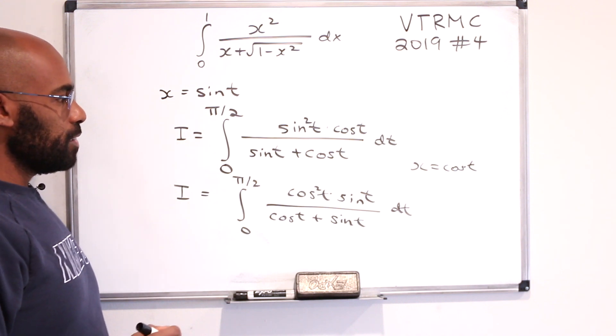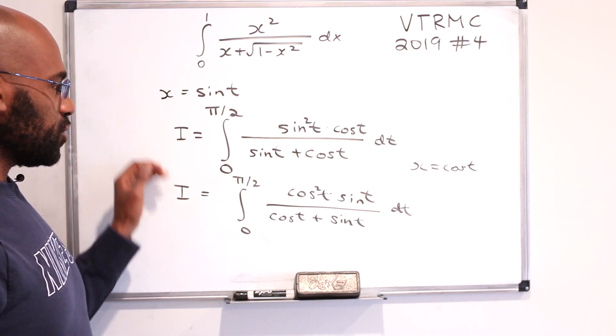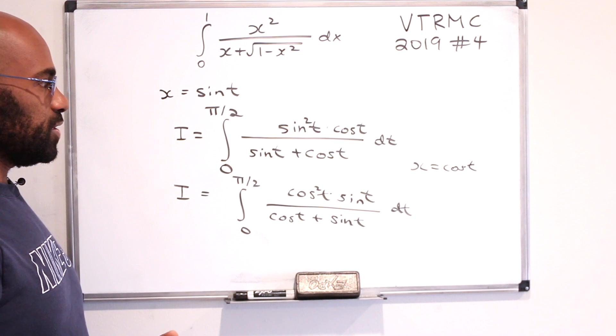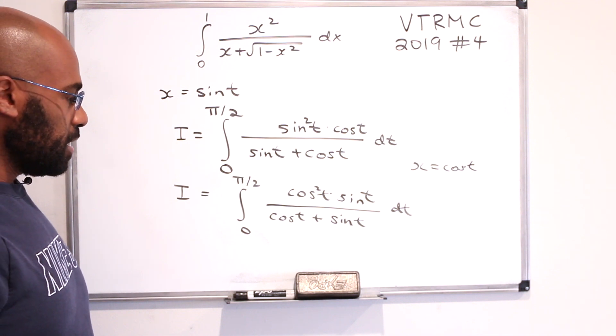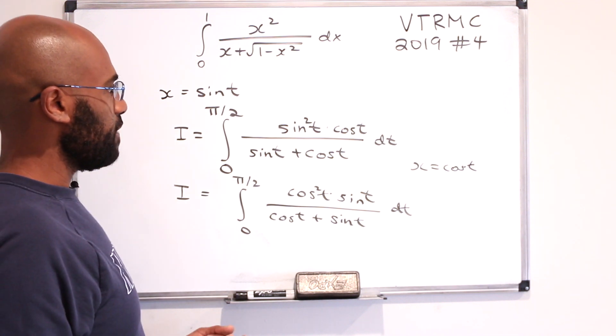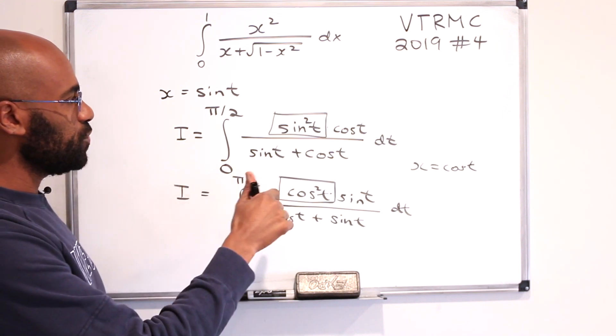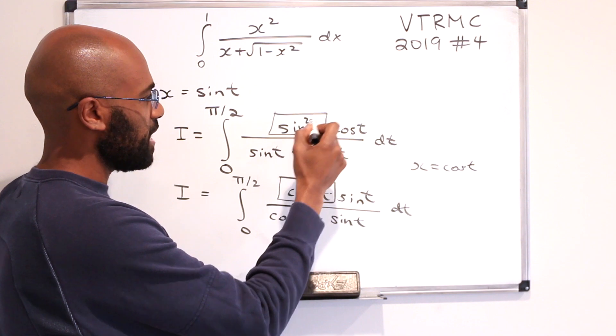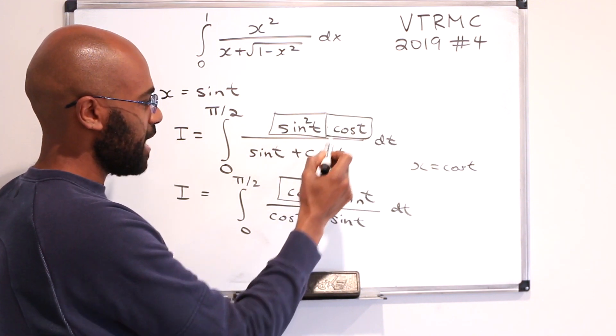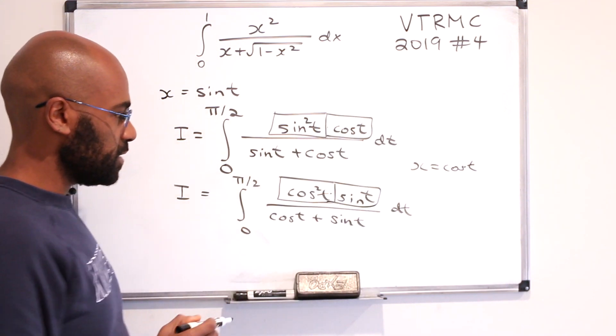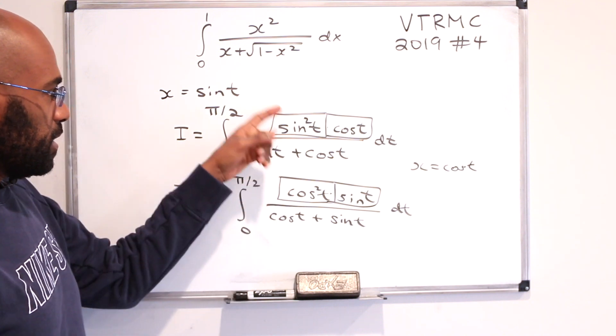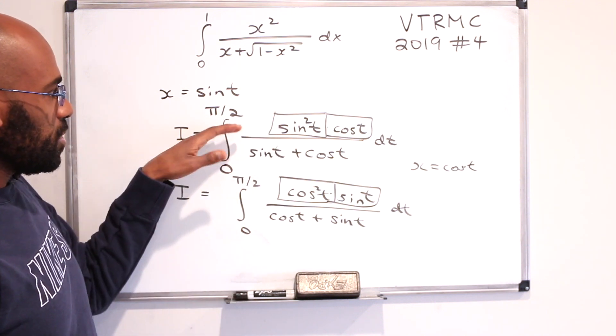Okay, so here are two different representations of the integral using these two substitutions. Now, there's something really advantageous here if we take a look. So now let's try to put these two together. We notice we have this sine t cosine t factor in the numerator of both of these.